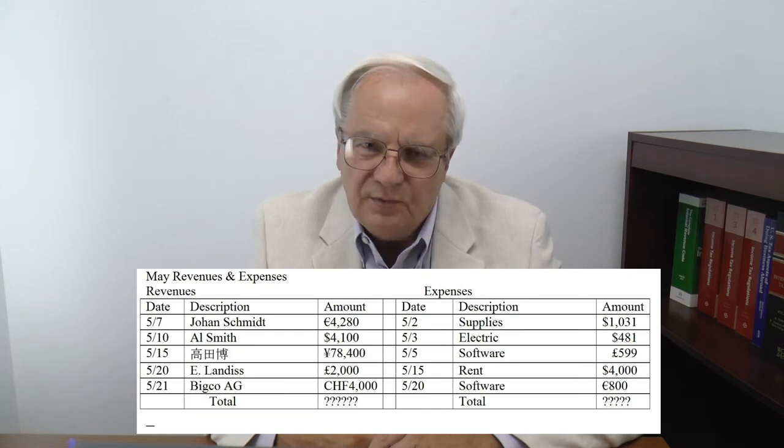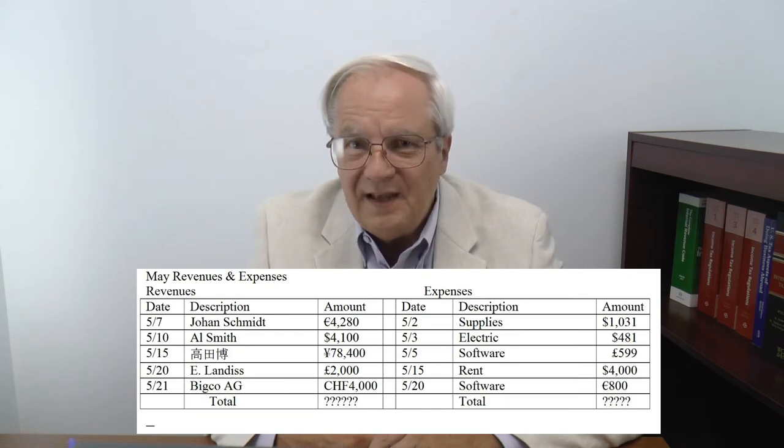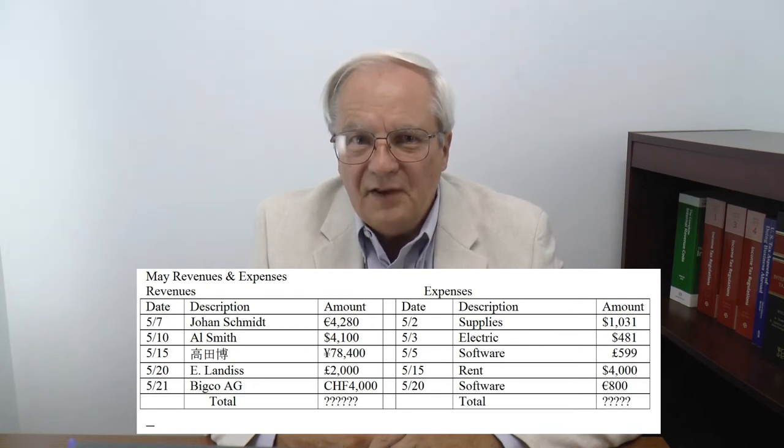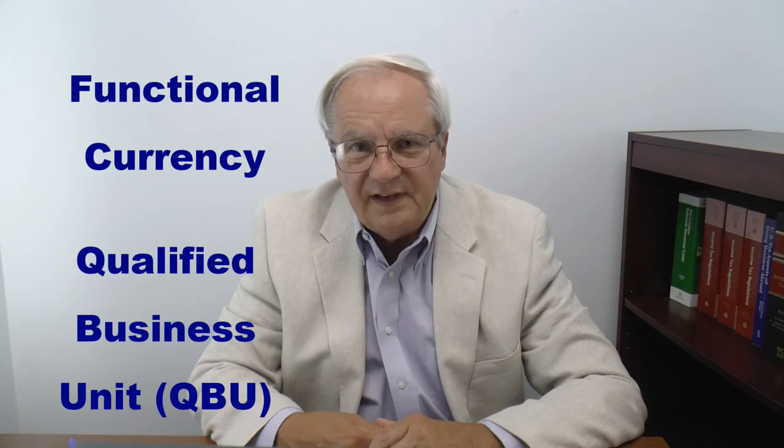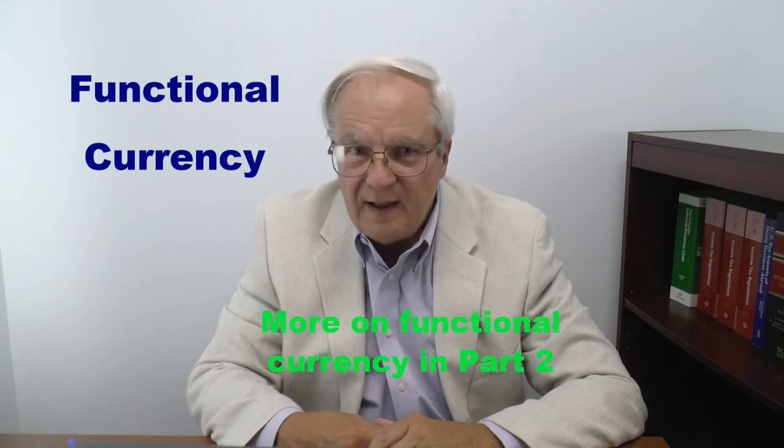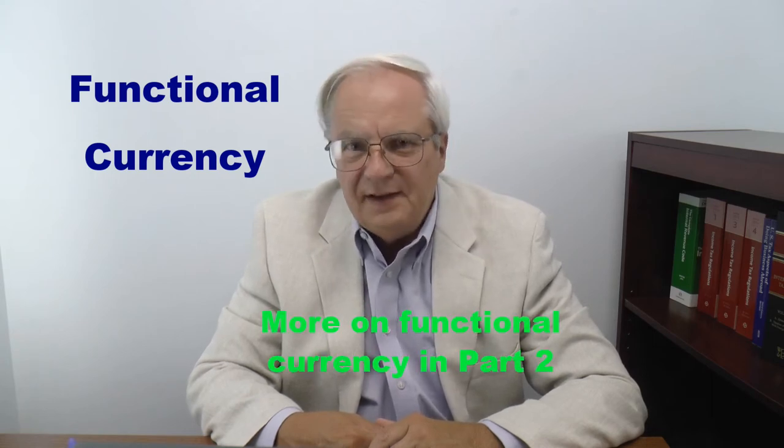If you do business internationally, it would be a mess if you tried to determine your income or expenses tracking each currency you used. Transactions may be incurred in many currencies, but before they're recorded they must be converted into a single currency called the functional currency. For book purposes, this process is called measuring or re-measuring. Functional currency means the currency used for an individual or entity, or a qualified business unit of that individual or entity, for most of its dealings. Books should be kept in this functional currency.